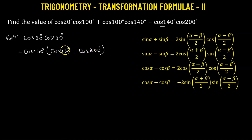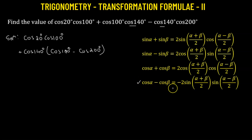We can clearly observe that we get a difference of two cosine functions, so we will be able to apply the transformation formula for cosine α minus cosine β. Let's apply that now.